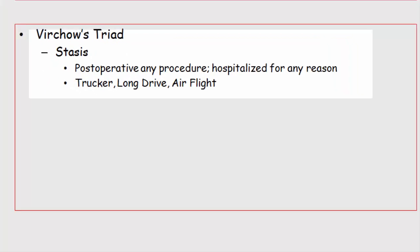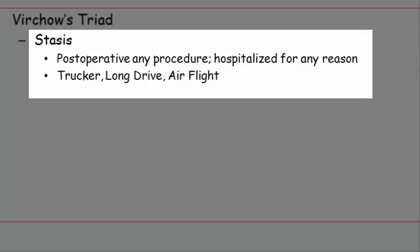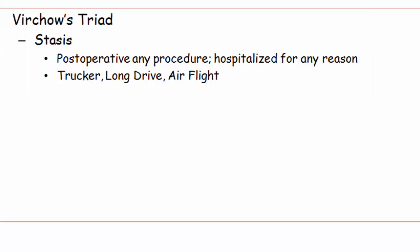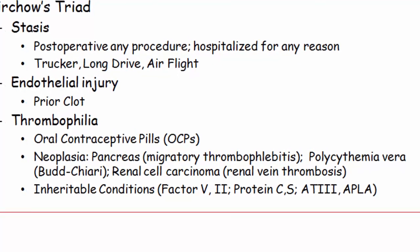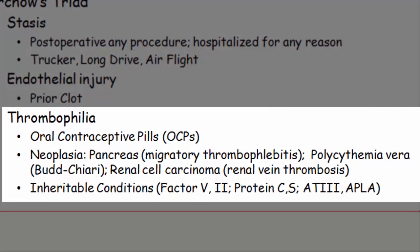Who's at risk? Virchow's triad. Pay attention to stasis — as in laying in a hospital bed for any reason — any truck driver or anyone who flies is a stasis scenario. Endothelial injury for all intents and purposes includes prior clot. Then there is thrombophilia. Oral contraceptives almost always imply a clot. Be aware of the malignancies associated with clot, especially adenocarcinoma of the pancreas, polycythemia vera, and renal cell carcinoma.